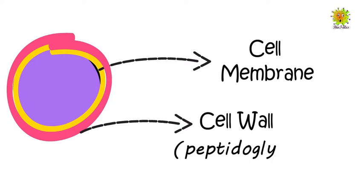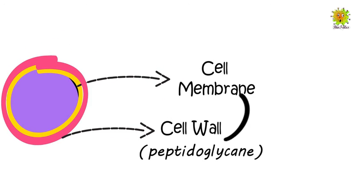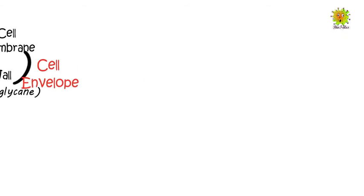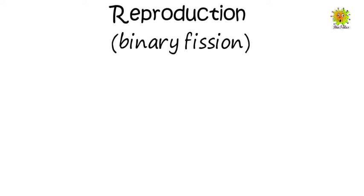Cell membrane and cell wall together are named the cell envelope. Most bacteria cannot survive without having a cell wall. Let's talk about reproduction in bacteria. Bacteria reproduce by binary fission, in which one bacterial cell splits into two after it attains a certain size.